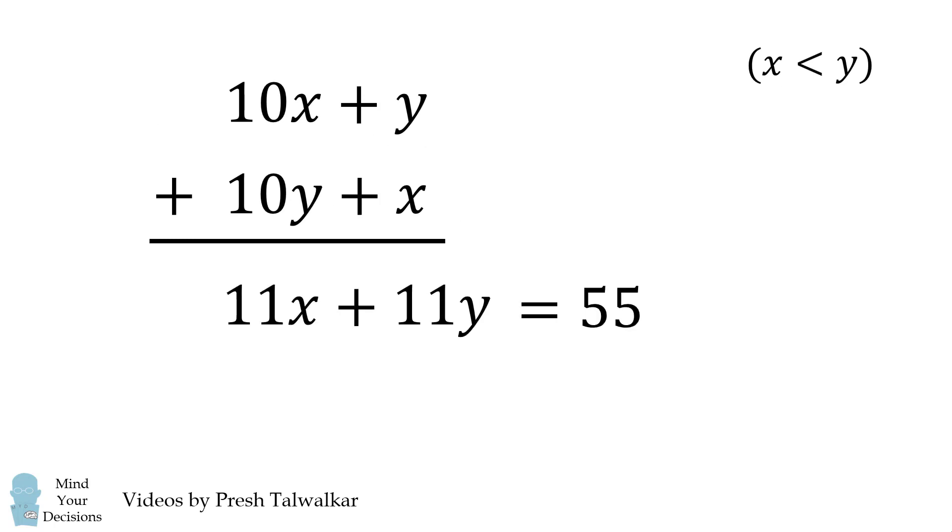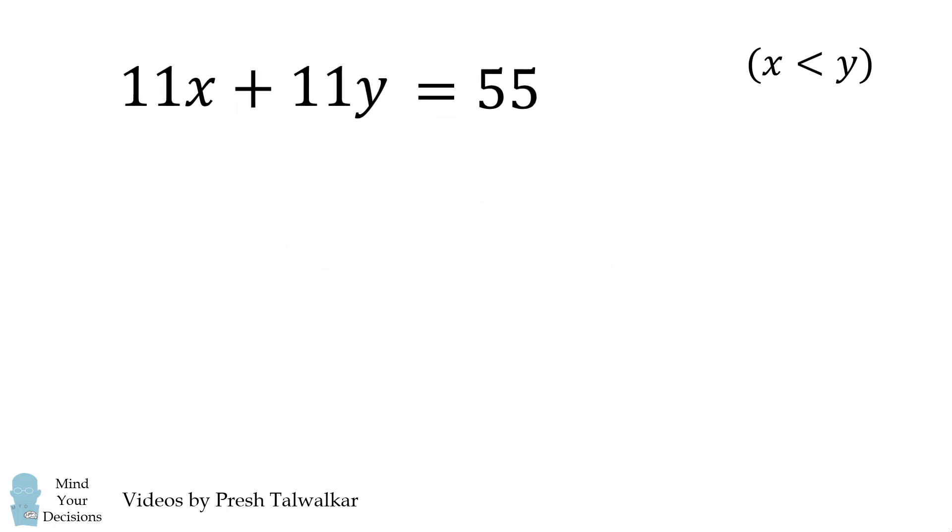And the sum of the ages is 55. We then divide both sides by 11, and this will simplify to be x plus y is equal to 5.